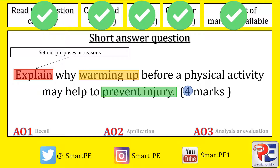Once you've done that, you then need to make another AO1 point about what happens mentally when you warm up, and then make another AO2 point as to how that could potentially prevent injuries. Remember, explain questions need you to expand on a point by setting out purposes or giving reasons.